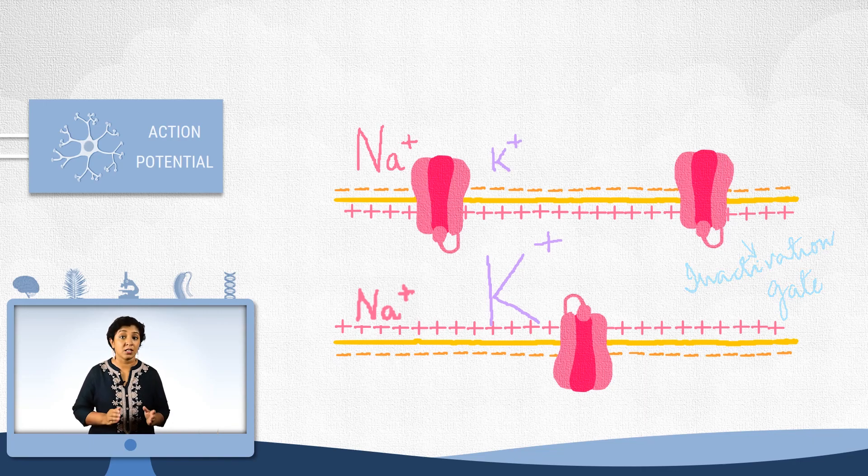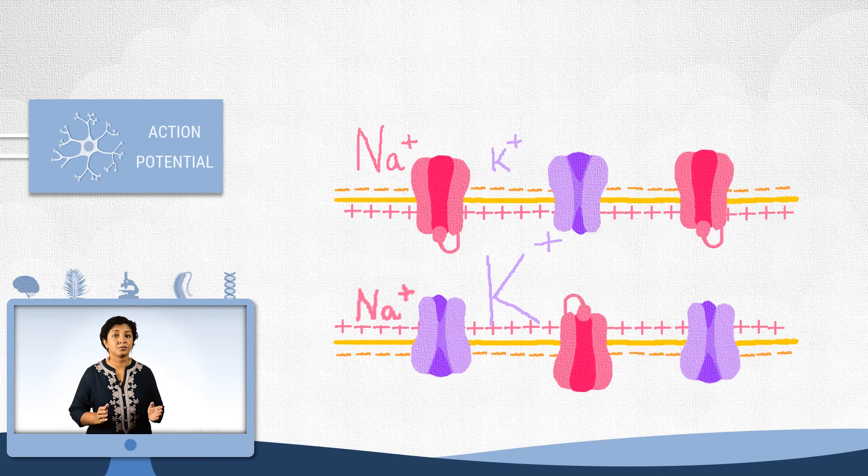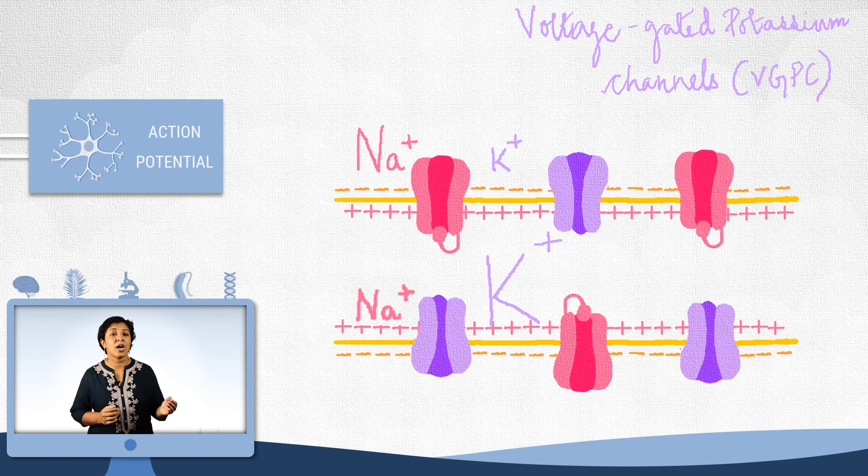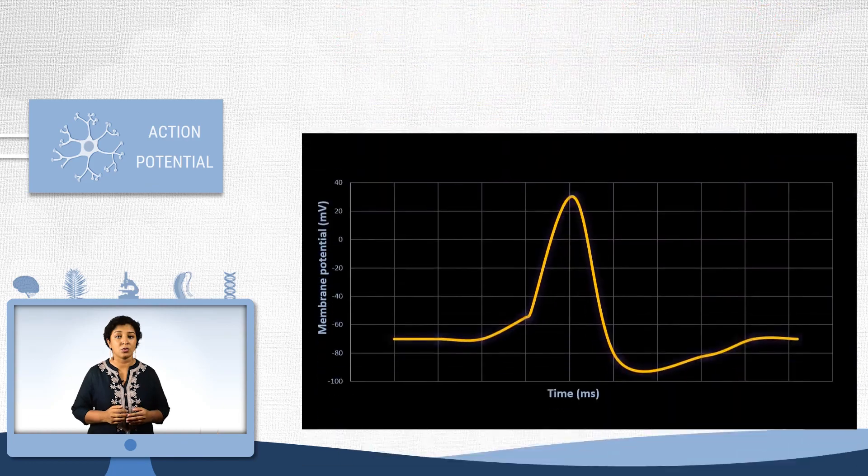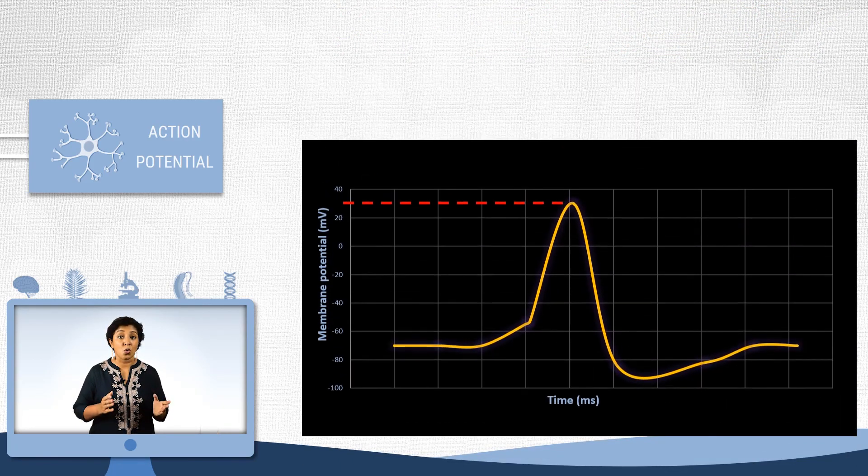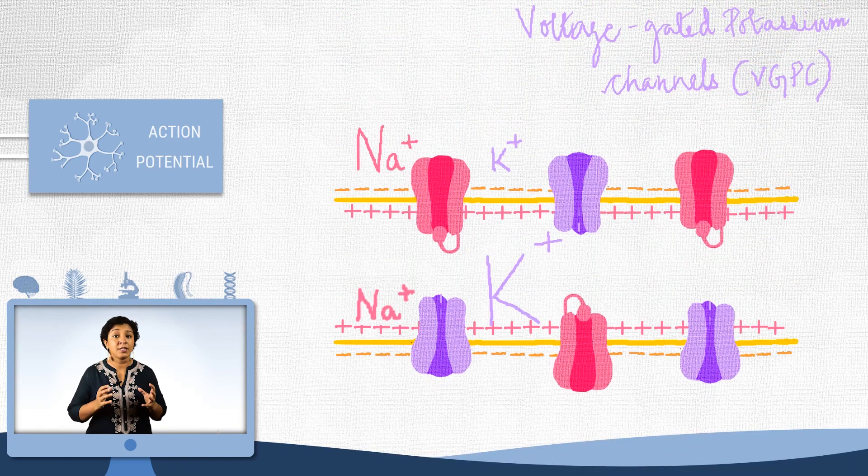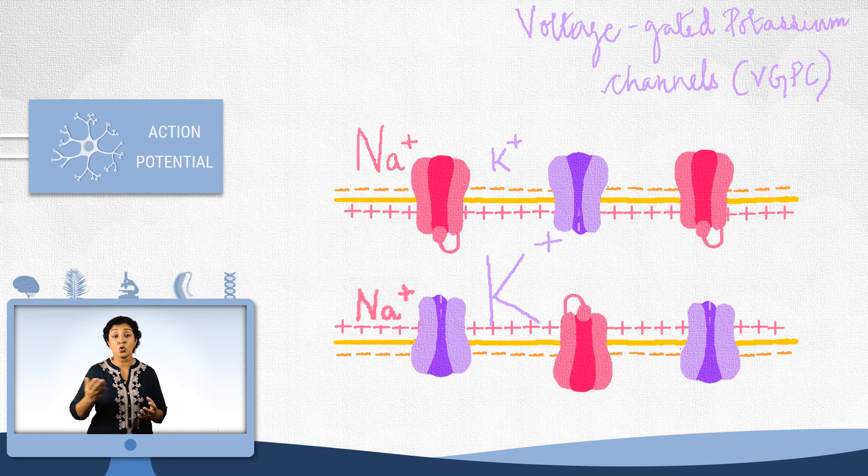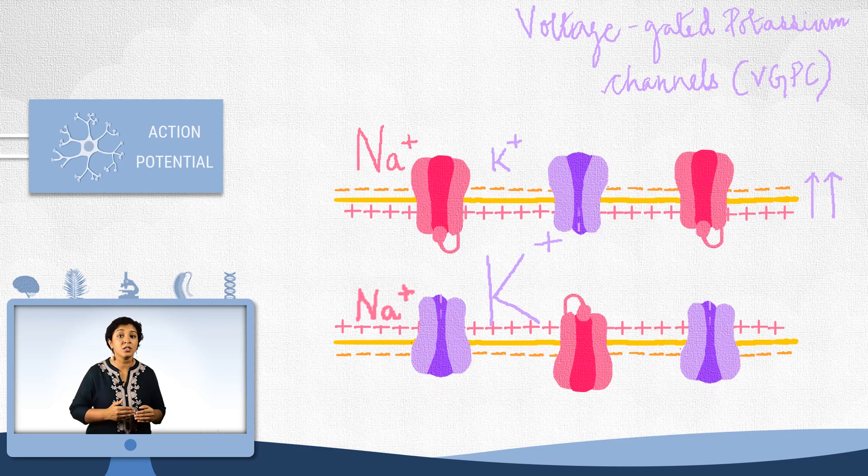By the time these channels close, another type of channel called the voltage-gated potassium channels will open. These are also regulated by voltage. But they open at a much higher voltage of 20-30 millivolts. And when these channels open, it increases the permeability of potassium. And potassium will go rushing out. Note that both the electrical and the concentration gradient is driving potassium outside.